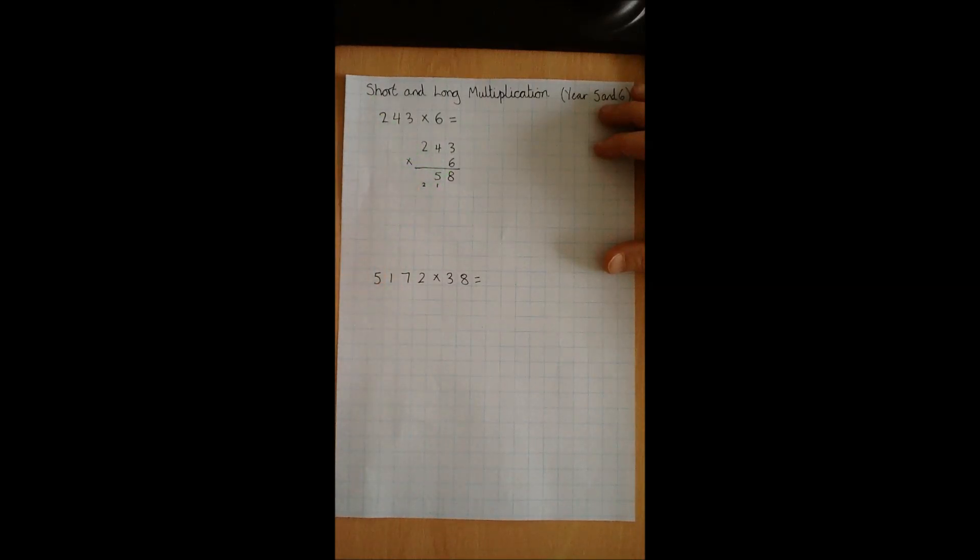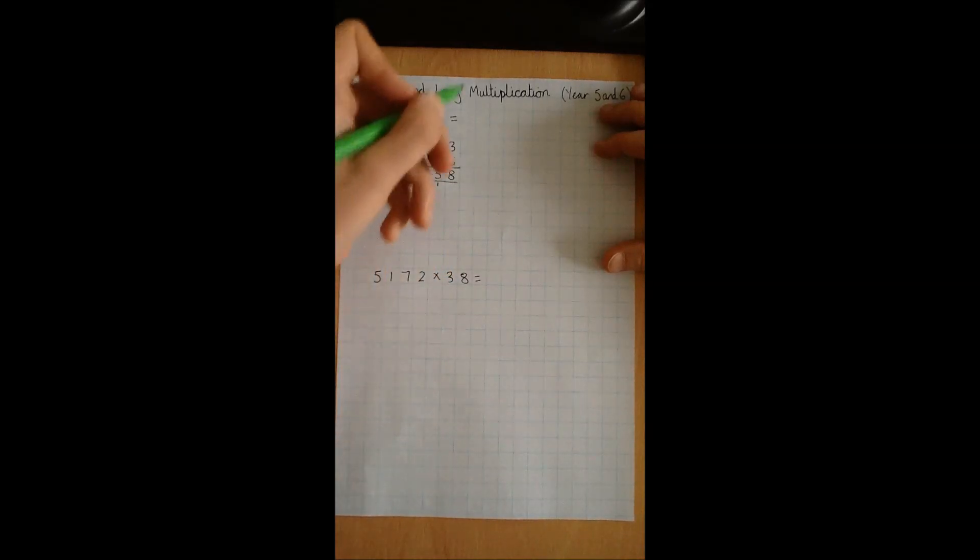And 6 multiplied by 2 is 12, plus the 2 that we carried across, which gives us 14. And our final answer therefore is 1458.